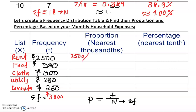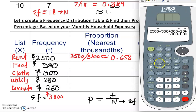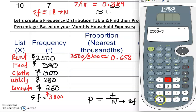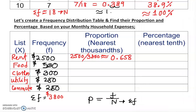Now for proportions: rent is 2500 over 3800. Since we're rounding, I'll use 'approximately.' Let me show you: 2500 divided by 3800 equals 0.658. If your calculator shows many more digits, make sure you've set it to round to three decimal places. Moving the decimal two places right gives 65.8% — that's how much of your expenses goes to rent.